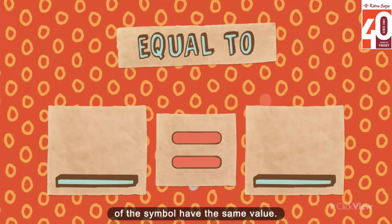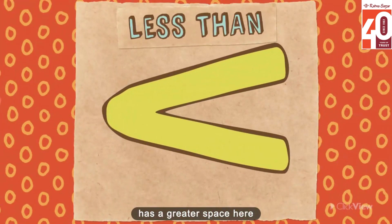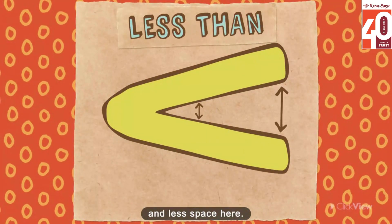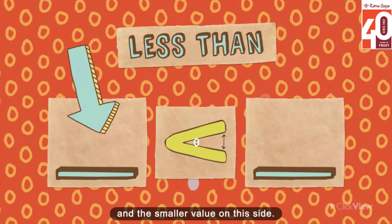The less than symbol has a greater space here and less space here. This means you put the greater value on this side and the smaller value on this side.